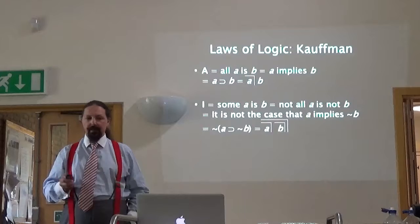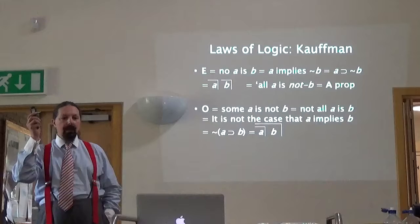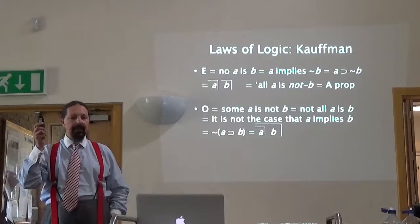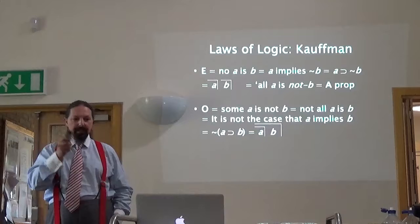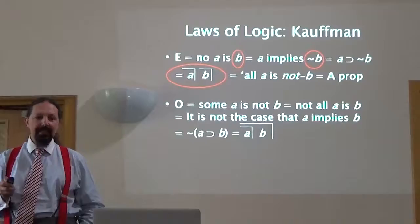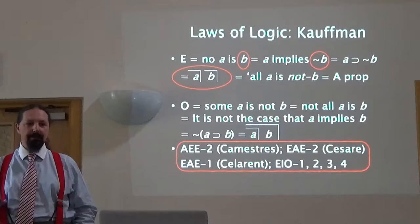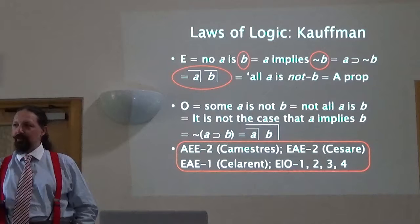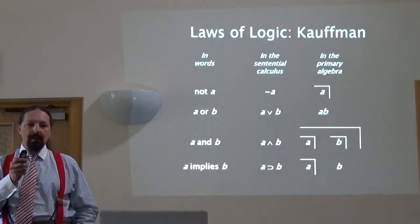Kauffman kept the notation the same for the A and I propositions, but when it came to the E propositions he converted those to an A proposition, reading them as 'all A is not B' rather than 'no A is B'. And the O propositions remain the same. That lack of distinction between negation and implication will lead to problems — it leads to problems for me, as somebody who works with classical logic, when I want to work with patterns that include E propositions.